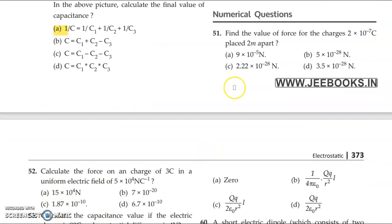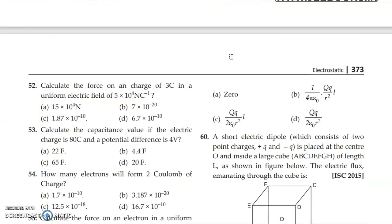Numerical questions. Question 51 is formula based. I will give you a hint. You can apply the formula 1 by 4 pi epsilon 0 q1 q2 by r square. Everybody can do it. It is a very basic question. After solving, you will get answer as option A, 9 into 10 to the power minus 5 newton. You can try these questions. I am just marking the answers.